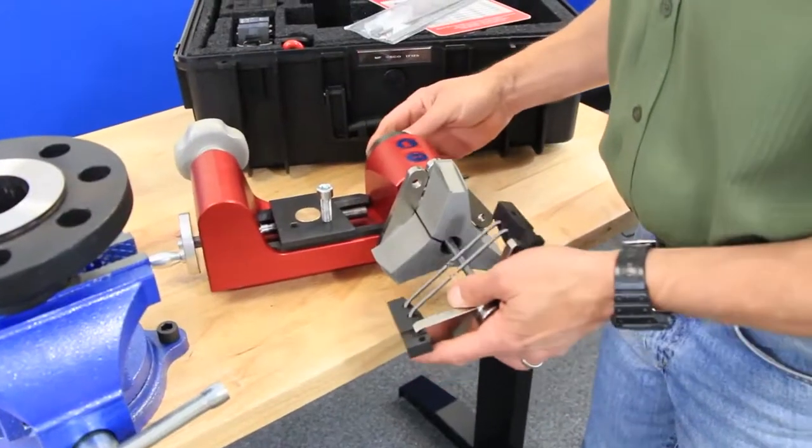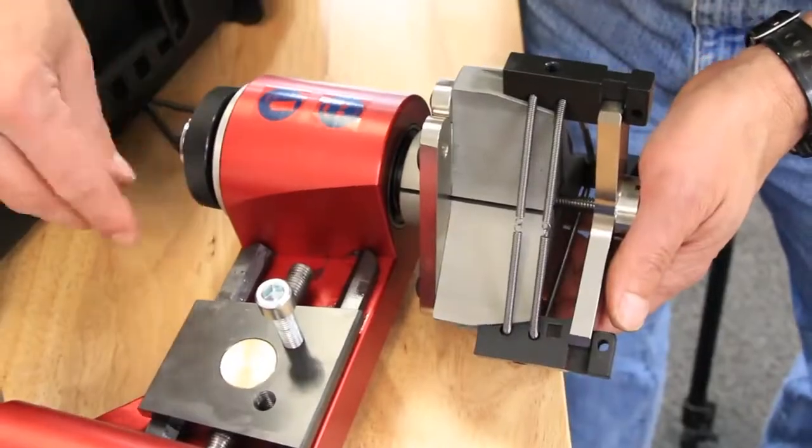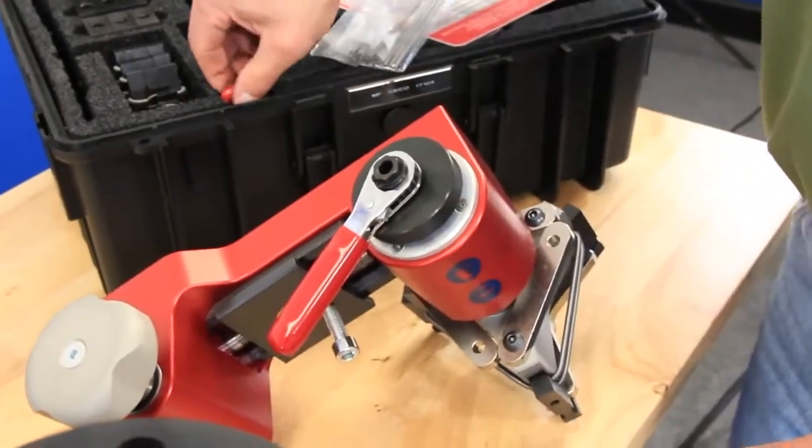Now that our rib and actuator assembly is prepared, we can reinsert it into the tool the same way we did in the first example, using the knurl knob to draw them in.